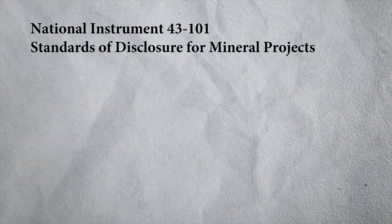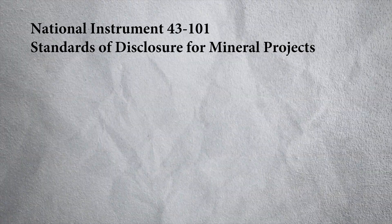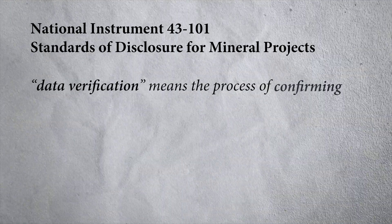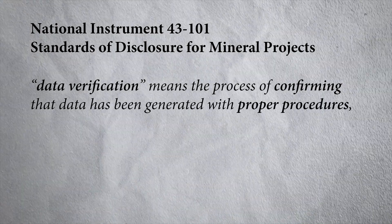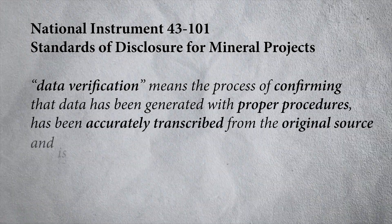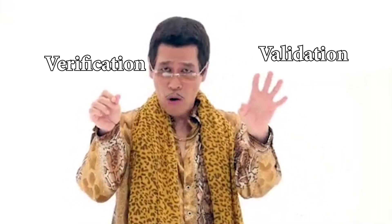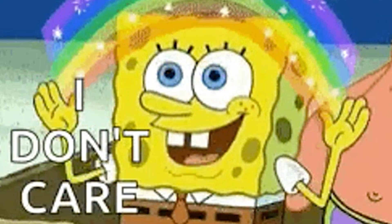If we go back to the definitions in the CIM guidelines in NI-43-101, we have a few instances of verification. Here's a definition: it means the process of confirming that data has been generated with proper procedures, has been accurately transcribed from original source, and is suitable to be used. To me, that is kind of verification and validation together. And therefore, in NI-43-101, there is no definition of validation — the two things are not separated. As a non-native English speaker, I get confused by this. These are words with meanings — why are they different, and are they supposedly the same here?